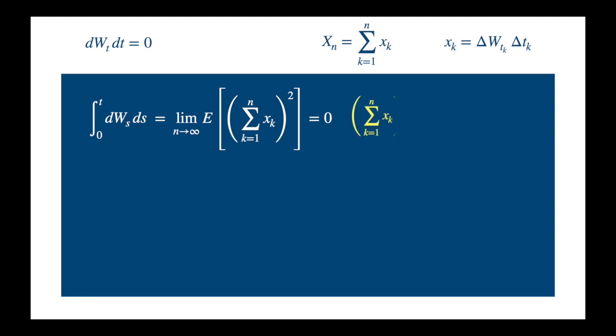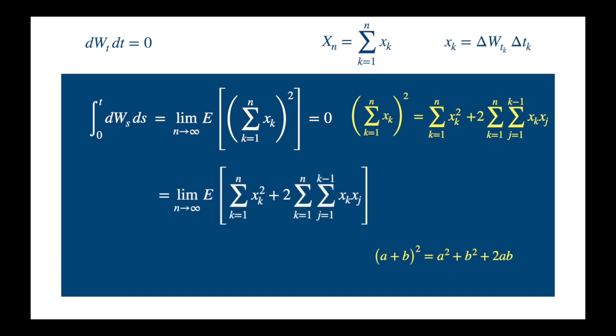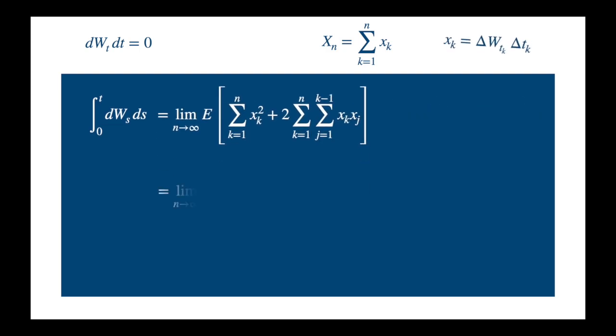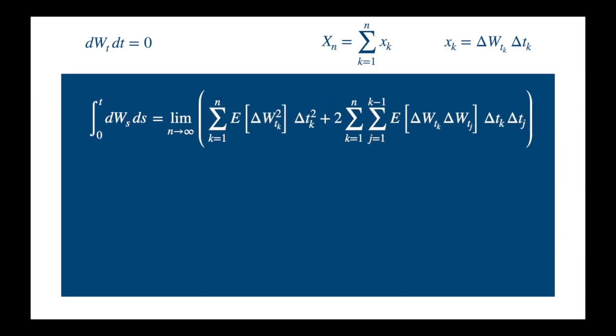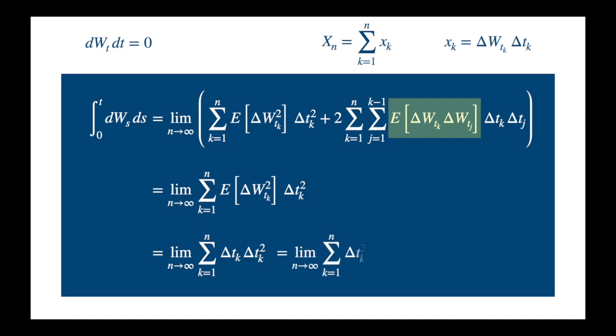Now we can split the square of the sum into square and cross terms. So this is just a multivariate version of a plus b squared. a squared plus b squared is captured by the first term, and then 2ab is captured by the second term. Let's make the substitution. And we can now replace x_k by delta W times delta t. Expectation of the sum is the sum of expectations, and we took delta t out of the expectation because it is deterministic. And now we just need the properties of the Brownian increments. Brownian increments in non-overlapping intervals are independent, so the second term is 0. And then expected value of delta W squared is equal to the length of the sub-interval. And we can combine the delta t term, so we get delta t cubed.